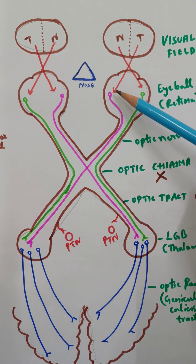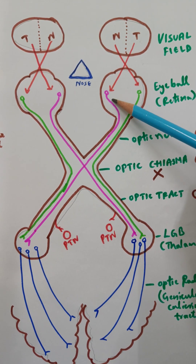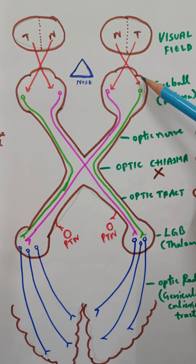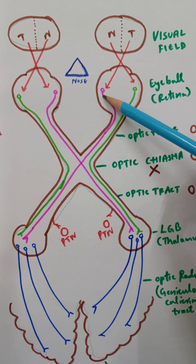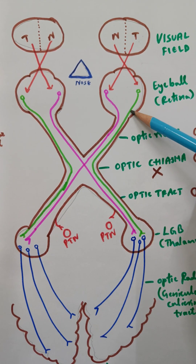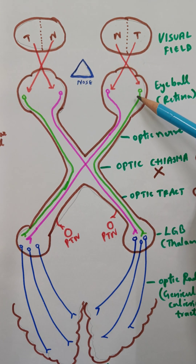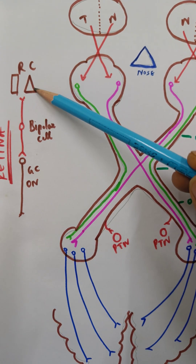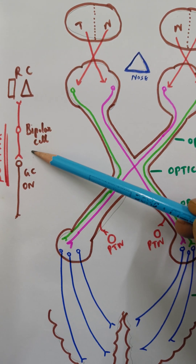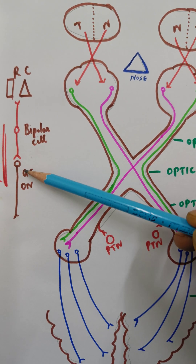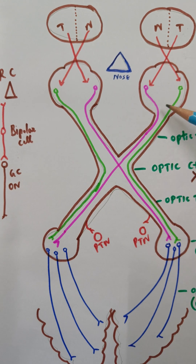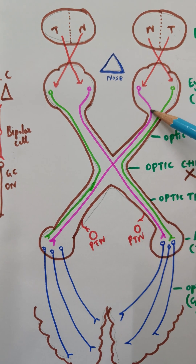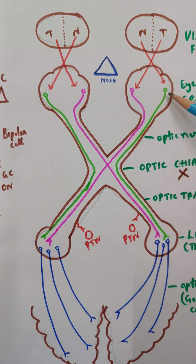The retinal fibers on the nasal side are getting the stimulus from the temporal field of vision. Since this half of the eyeball is closer to the nose, we call it the nasal retina, and this is the temporal half of the retina. In the retina, the receptors for vision are rods and cones. Rods and cones synapse with a bipolar cell — the bipolar cell is the first-order neuron in the visual pathway — which then synapses with the ganglion cell, the second-order neuron shown here.